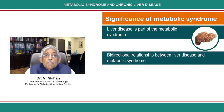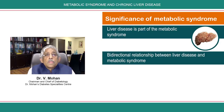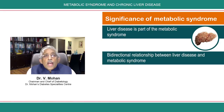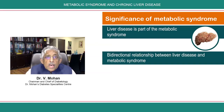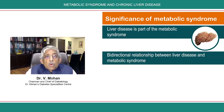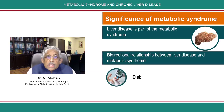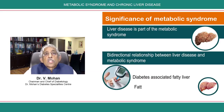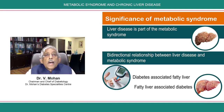There is a bi-directional relationship: metabolic syndrome can lead to NAFLD, or non-alcoholic fatty liver disease, and NAFLD can in turn be part of — and also lead to — metabolic syndrome. If you take diabetes itself, diabetes is associated with fatty liver, and fatty liver is associated with diabetes. These are called bi-directional relationships.